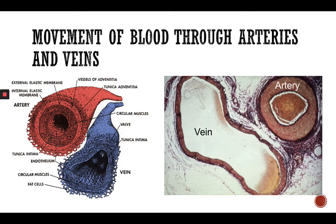Movement of blood through the arteries and veins — carrying blood around the body is really important. For carrying blood from the heart and to the heart, the arteries, veins, and capillaries play an important role. Arteries are the blood vessels that carry oxygenated blood away from the heart, while veins, on the other hand, carry the deoxygenated blood back to the heart.